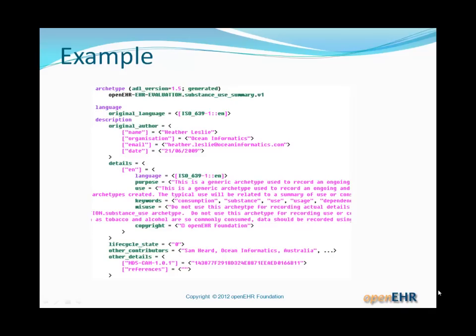Just to remind you, here's an example. You can see the language section gives the original language as English, and in the description section we have a number of items — original author details with an English language section inside that, a linguistic-specific section containing purpose, use, keywords, and so on. Then you'll see lifecycle state at the bottom, a list of other contributors, and also other details.